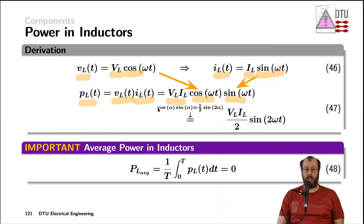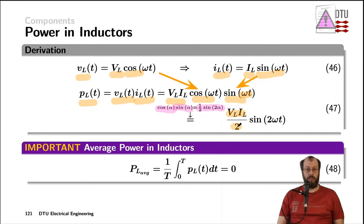Again, looking up the trigonometric equations, we can see that the multiplication of cosine of angle alpha with sine of the same angle alpha gives us one half of sine of twice the angle alpha. Using this equation and replacing alpha with omega times t, we get the peaks of the voltage and current of the inductor divided by a factor of 2 — coming from the trigonometric identity — times the sine wave of twice omega t.